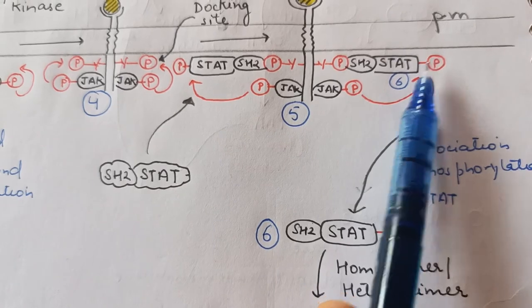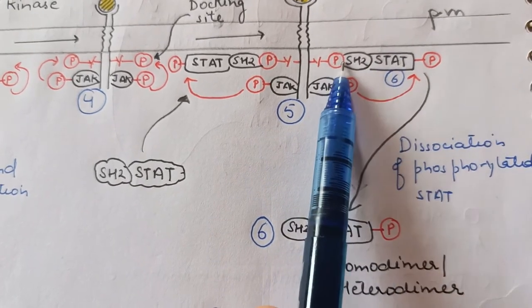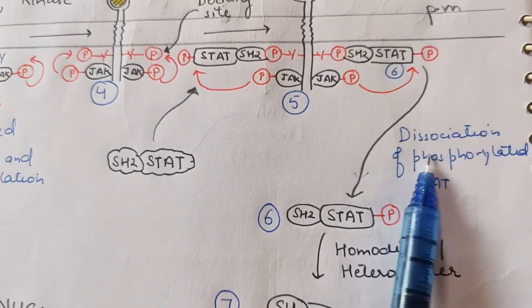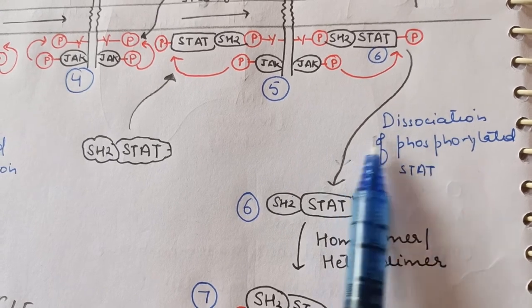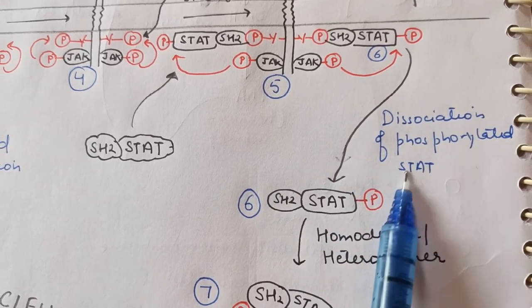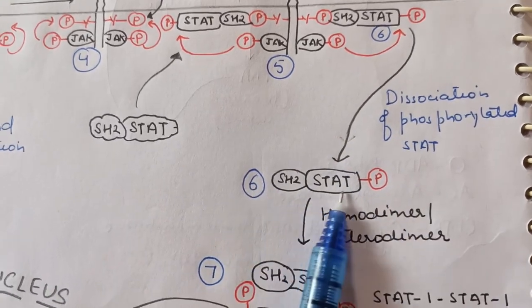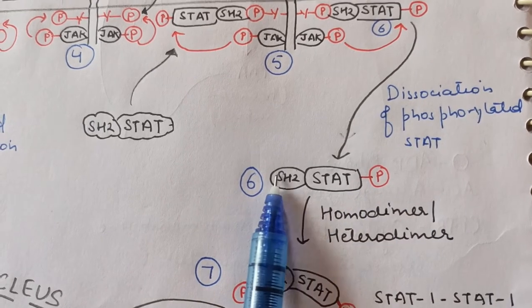Once STAT is activated and phosphorylated, dissociation of the phosphorylated STAT from the receptor occurs. So the STAT has now become phosphorylated and dissociates from the receptor complex.